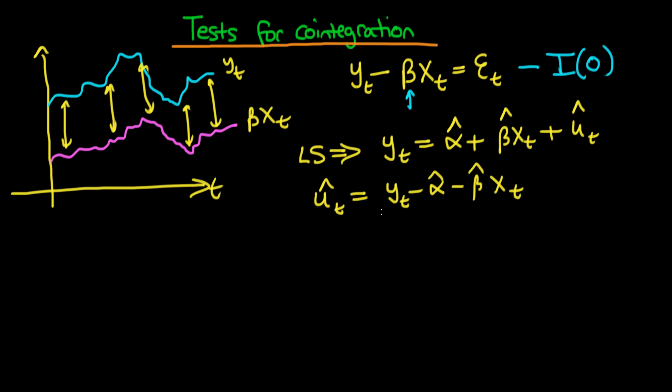And if it is the case that Yt and Xt are cointegrated you might think that our residuals should themselves be stationary. So they should be I0 much like we assumed that Et or epsilon t up here should be I0. And that's essentially true.